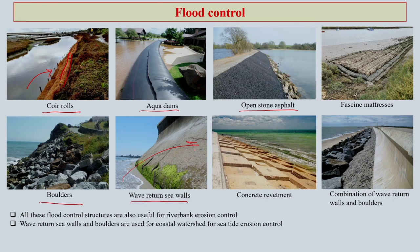The wave-written sea walls protect civilians and also inland agricultural purposes and other human-related activities. Concrete revetment also reduces the flow of water as well as the soil loss from the particular affected area. So if flood water comes suddenly, the flow of water can be reduced quite significantly by concrete revetment. The combination of wave-written walls and boulders is not very common in our country, but is another potential technique that can be used across the coastal line.